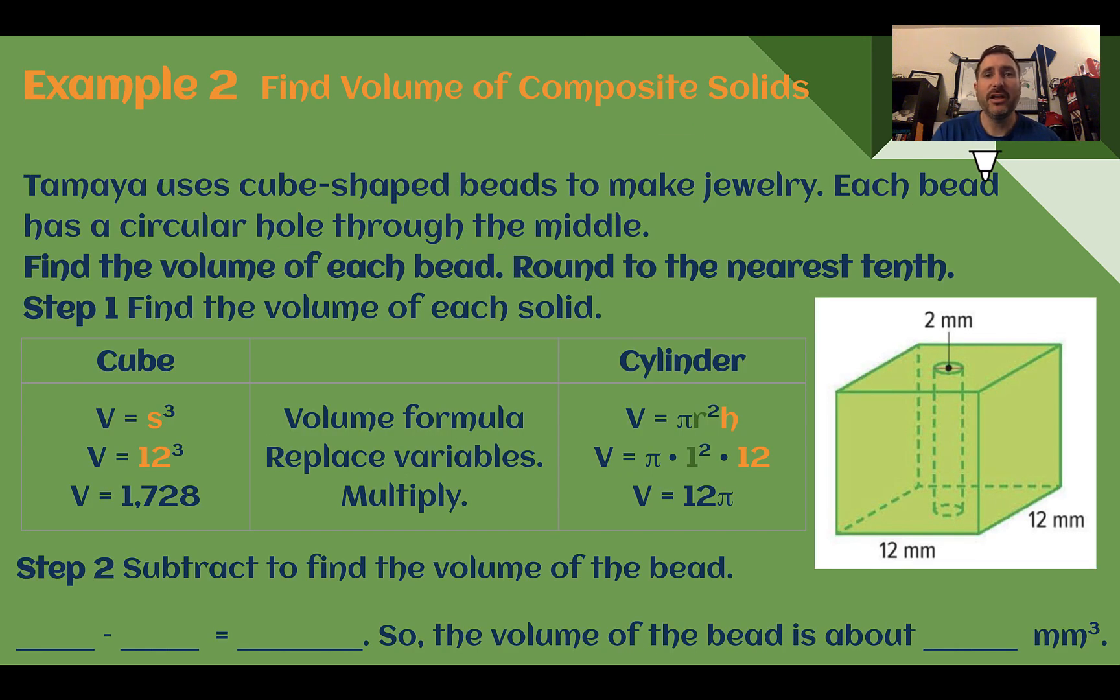Example 2, find volume of composite solids. Tamaya uses cube-shaped beads to make jewelry. Each bead has a circular hole through the middle. Find the volume of each bead, round to the nearest tenth. So unlike the first example where we had multiple solids and we were adding them together, sometimes, as in this case, we might have to remove one of our solids from the other to figure out what is left.